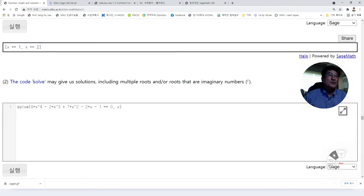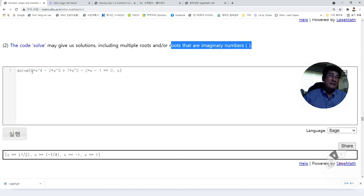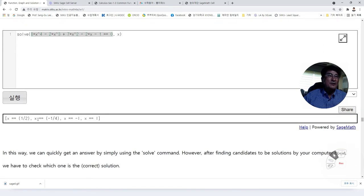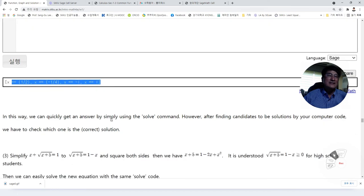This code solve may give us solutions including multiple roots or including imaginary numbers. For example, the second problem, the polynomial of degree four. Then we have four solutions. We have four distinct solutions.